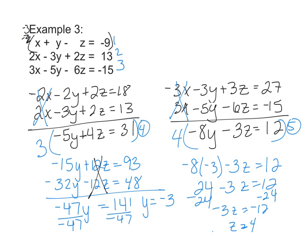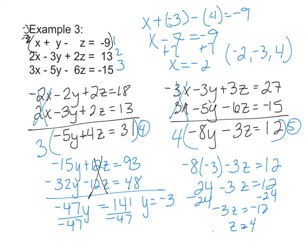And now that I know y and z, I can plug it into any of my original equations 1, 2, and 3 to find x. So x + y, which is -3, - z, which is 4, = -9. So we get x - 7 = -9. Add 7, and x = -2. So my ordered triple is -2, -3, and positive 4. That's my final answer.